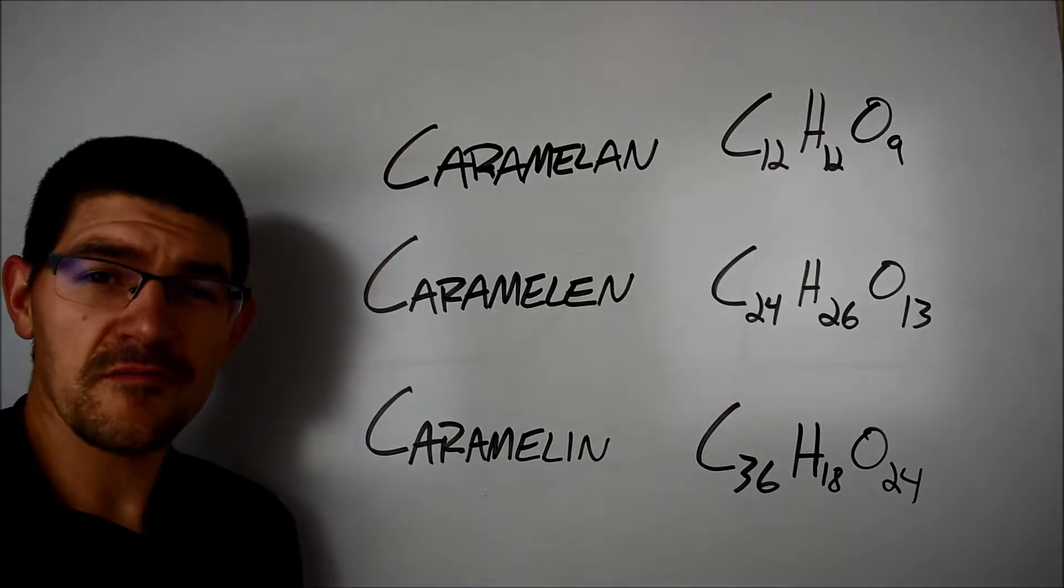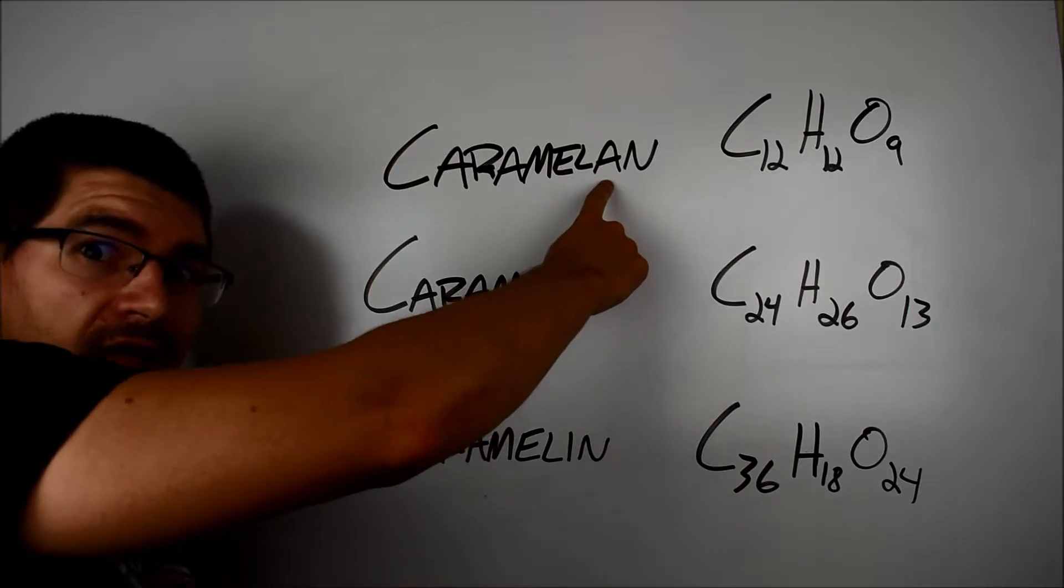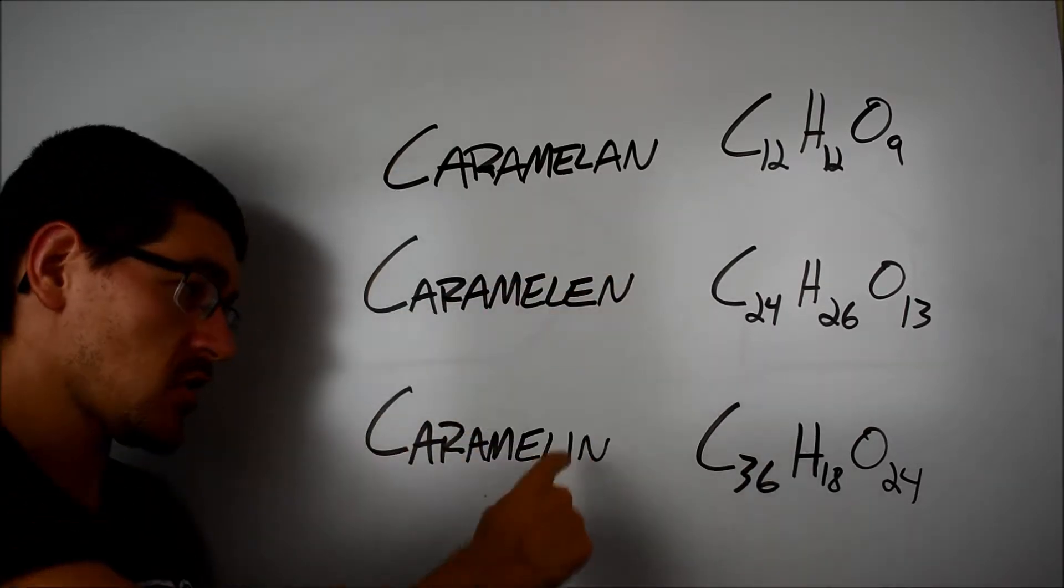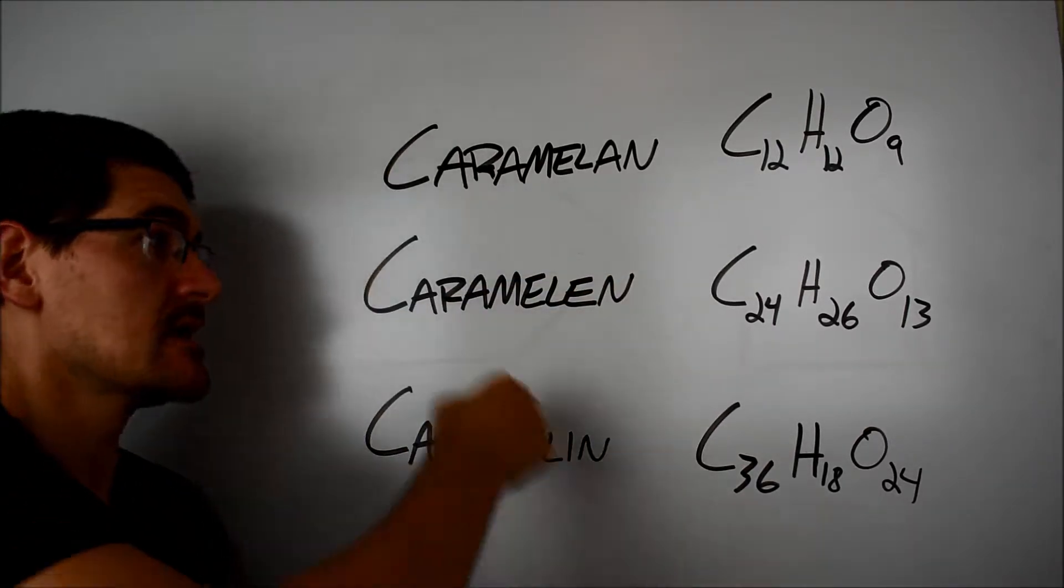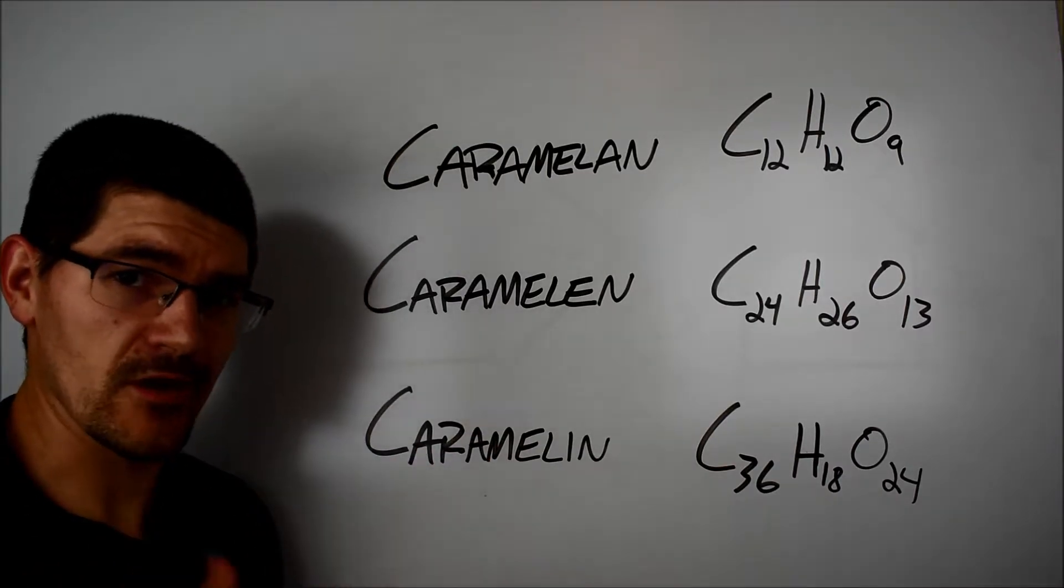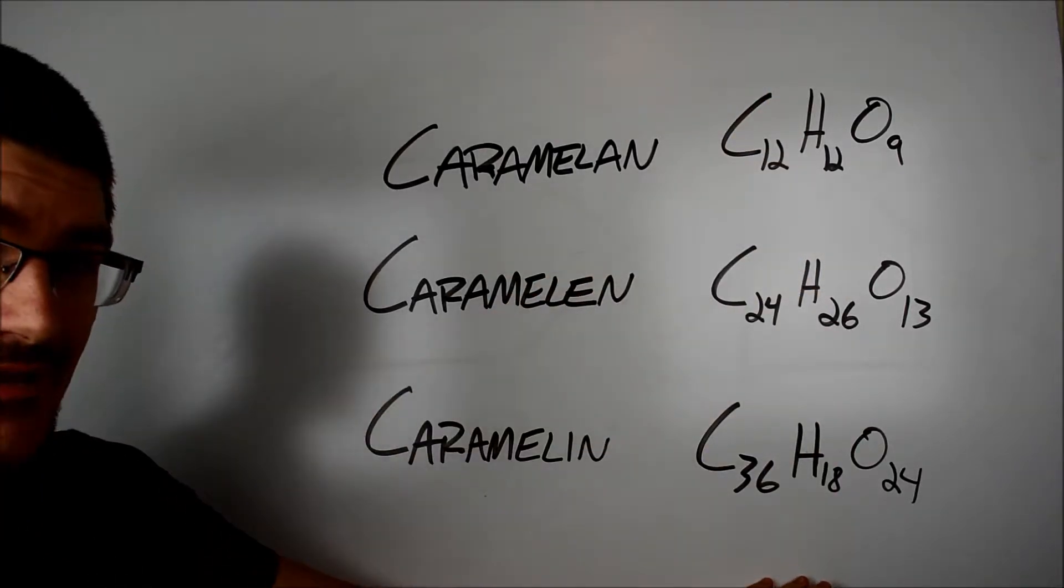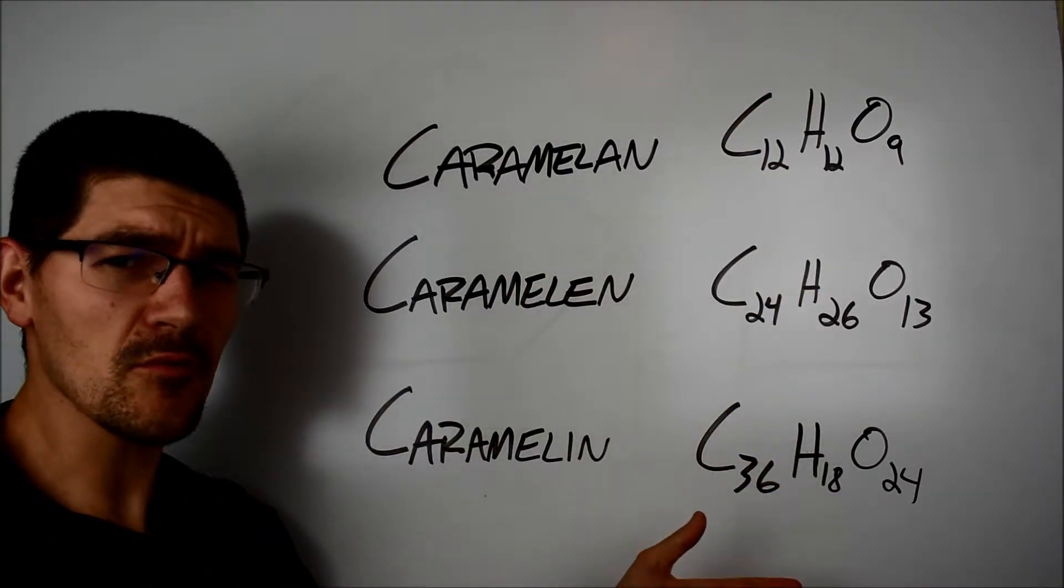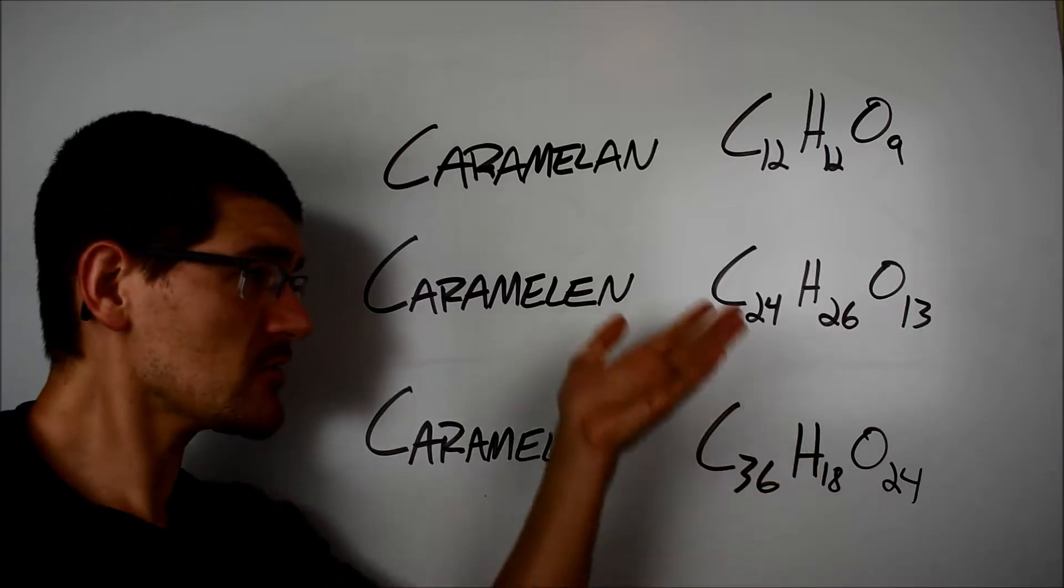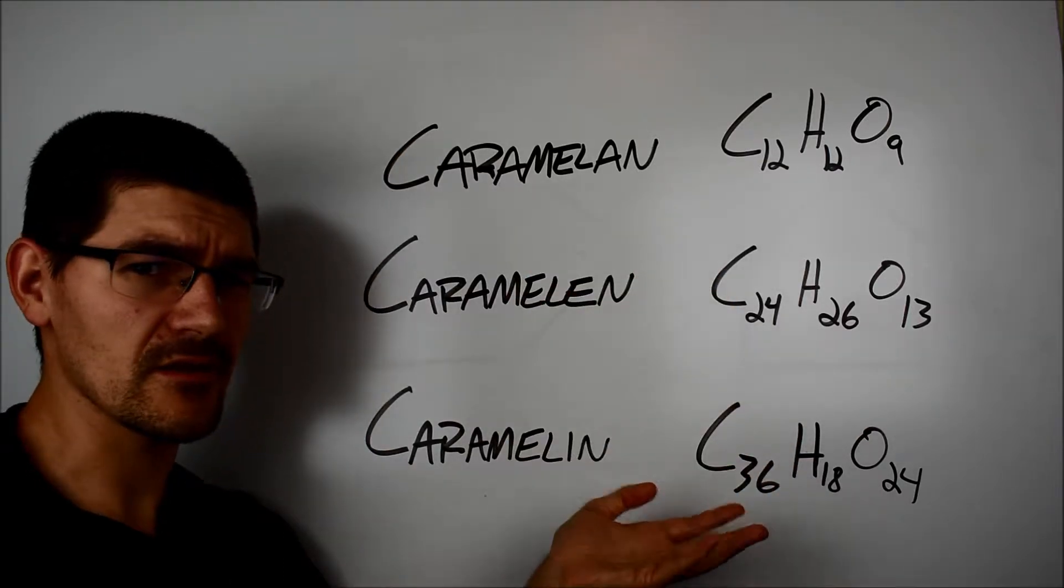And by draw them out, I mean I'm just gonna put the molecular formula. You can see Caramelan here with an A, Caramelan with an E, and Caramelin with an I. Those are the only difference in the words there, so if you had a hard time hearing it from my weird Appalachian dialect, that's probably why. On the molecular formula side though, as much as we know about Caramel, or we think we know about Caramel, we don't really know the structure of these molecules, so this is kind of the best I can do for you here.